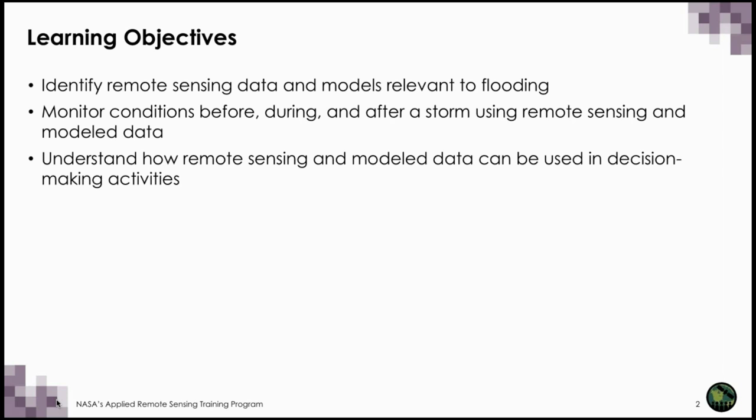The training objectives of this webinar are to identify NASA remote sensing or modeled data relevant to flooding, as well as other remote sensing and modeled data sets. Identify data that allows you to monitor conditions before, during, and after a storm or a flood, and to understand how remote sensing data can be used in decision-making activities. We will discuss the remote sensing data sets available for tracking these events, their characteristics, and how to access and interpret them. Every organization or agency can have different decision-making timelines through the phases of mitigation, preparedness, response, and recovery.